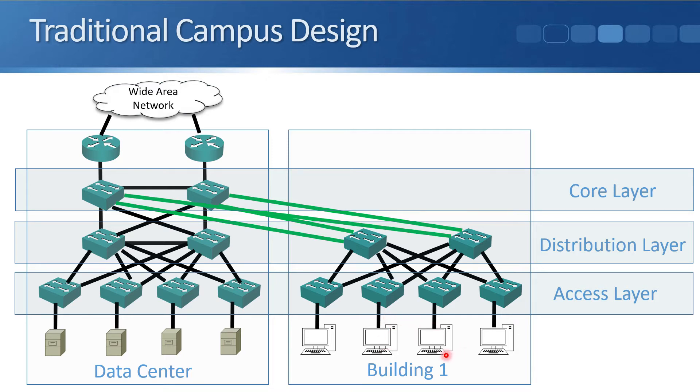You can see here it's going up from the building through the access and distribution layer to the core layer and then back down from the core layer to the distribution and access layer. So with our north-southbound traffic flows, that's going from the clients over here to the servers in the data center. The traditional campus design works really well where most of your traffic flows are going in that north and southbound direction.